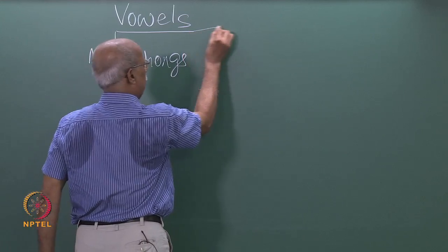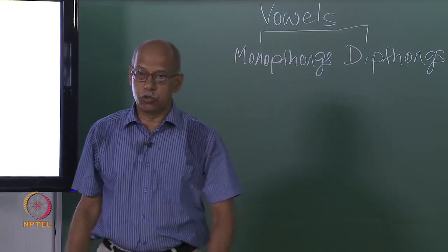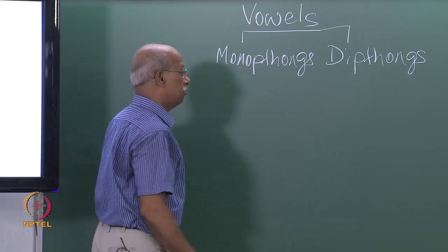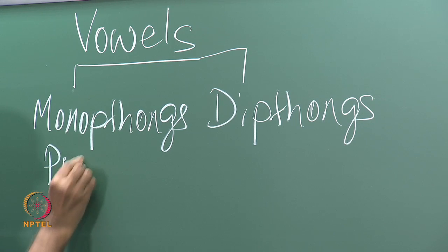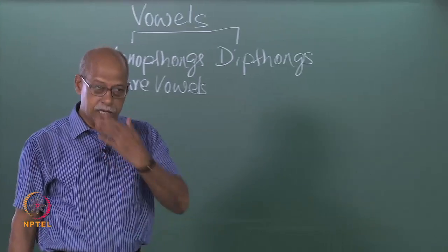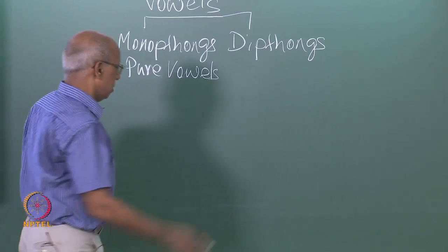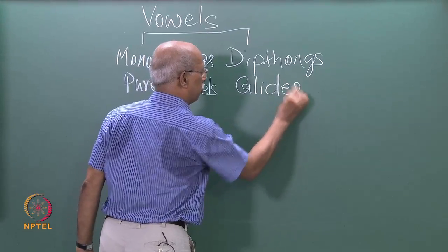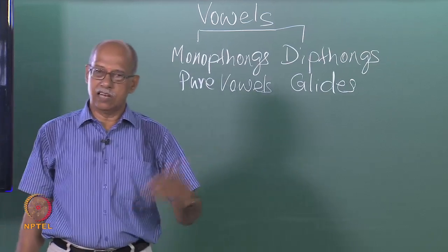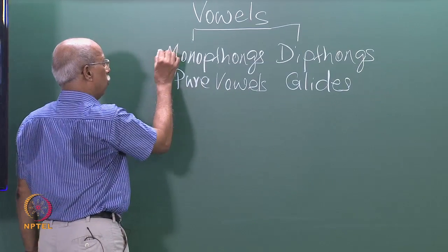Either they are monophthongs or they are diphthongs. In other words, either they are produced with one explosion or they are produced with two explosions. Some people describe these sounds differently and say either they are pure vowels — meaning there is no change, no obstruction — or they are glides. In other words, these vowels are produced by the tongue moving from one position to another position. In the case of pure vowels, the tongue does not change position; it continues to have only one position.